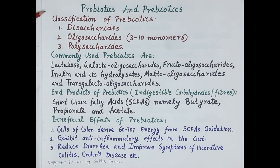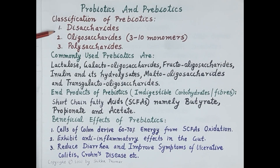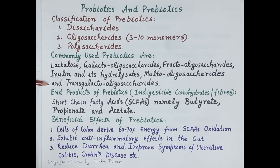The classification of prebiotics — that is, dietary fibers or indigestible carbohydrates found in dietary sources — is as follows. Prebiotics are classified as disaccharides, oligosaccharides, and polysaccharides. Commonly used prebiotics include lactulose, galactooligosaccharides, fructooligosaccharides, inulin and its hydrolysates, maltooligosaccharides, and transgalactooligosaccharides.